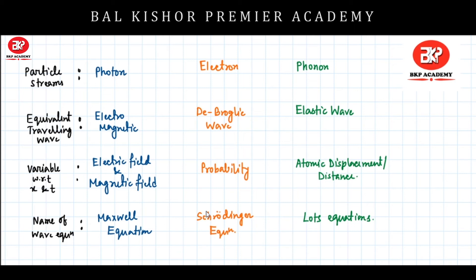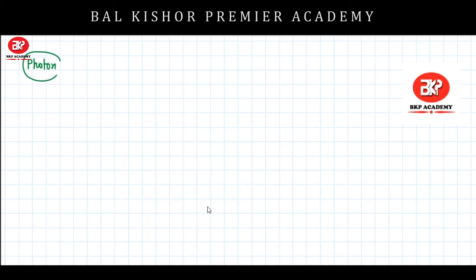These are the main particles we will encounter inside the semiconductor — the electron and the phonon. When we encounter a photon particle inside a semiconductor, we can think of the photon as an electromagnetic wave. There are benefits to thinking this way, which we will understand when we reach that section.